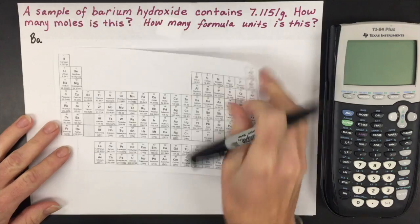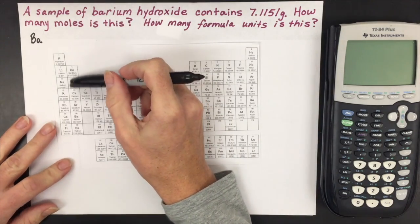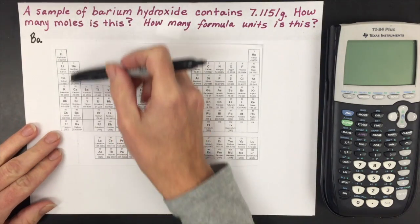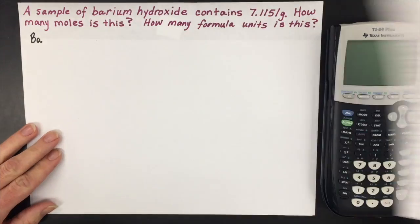The first thing is knowing that barium is an alkaline earth metal, and in this family all of these elements will carry a 2+ charge.